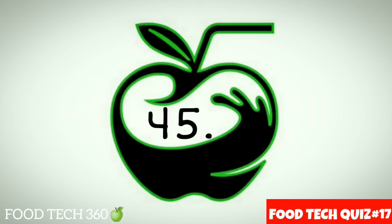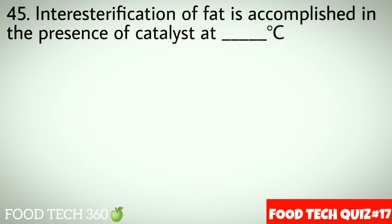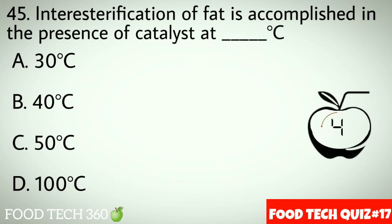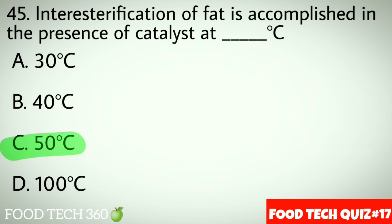Question number 45: Interesterification of fat is accomplished in the presence of catalysts at dash degrees Celsius. Options: A. 30°C, B. 40°C, C. 50°C, D. 100°C. Correct answer: C. 50°C.